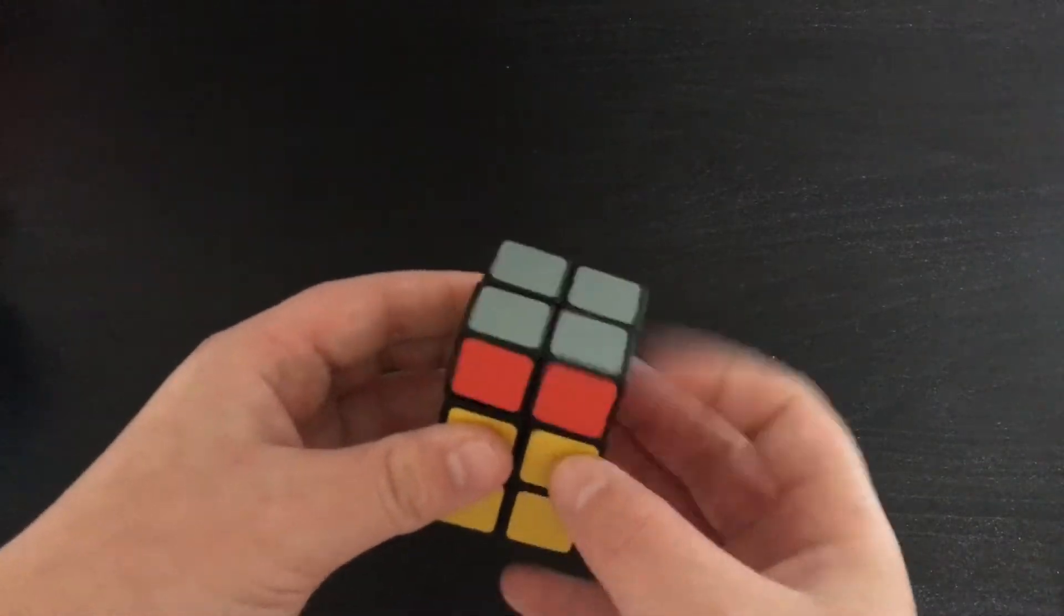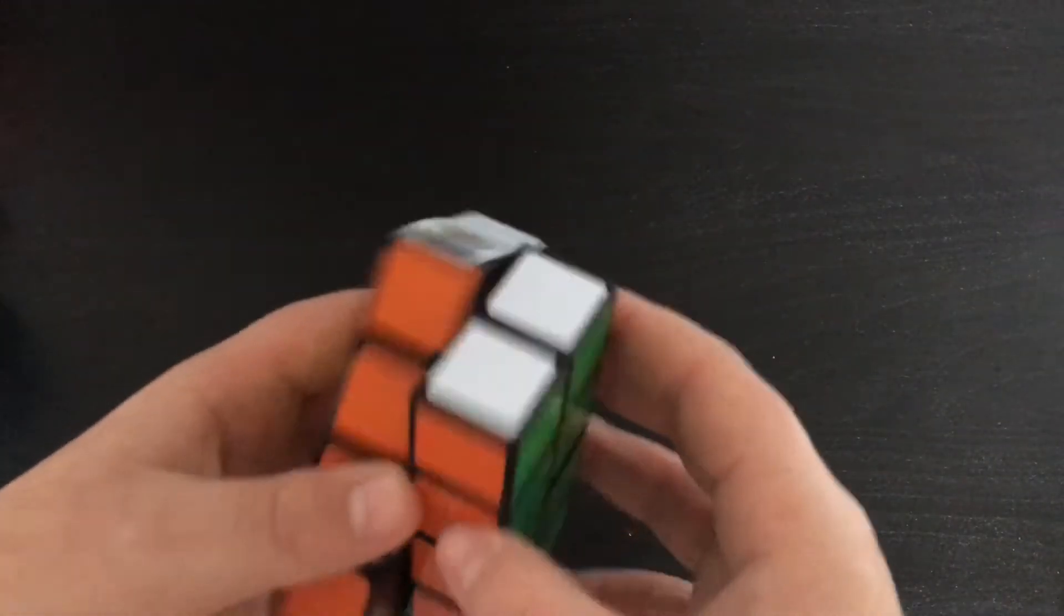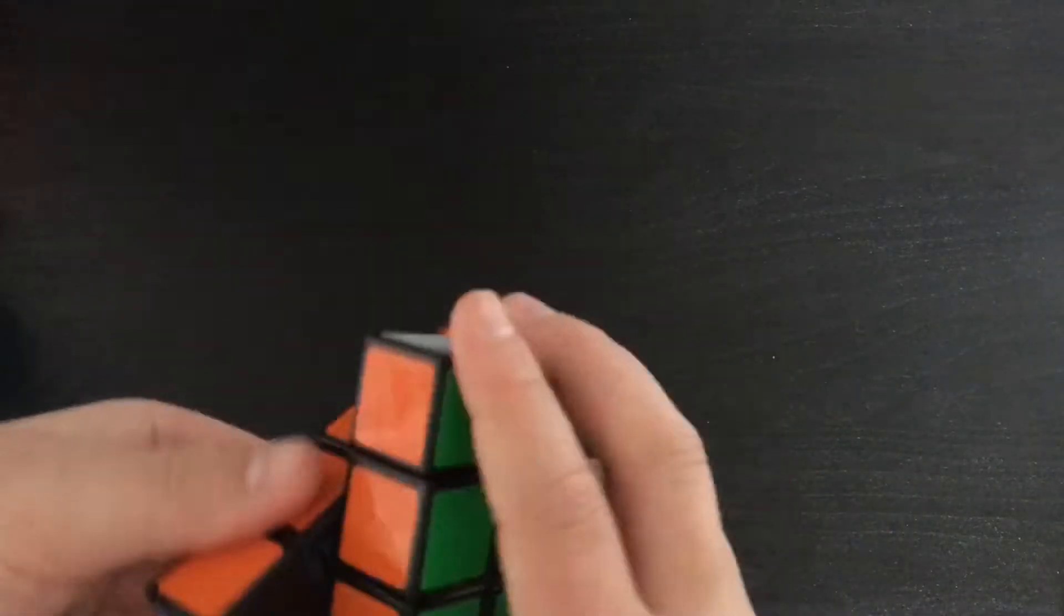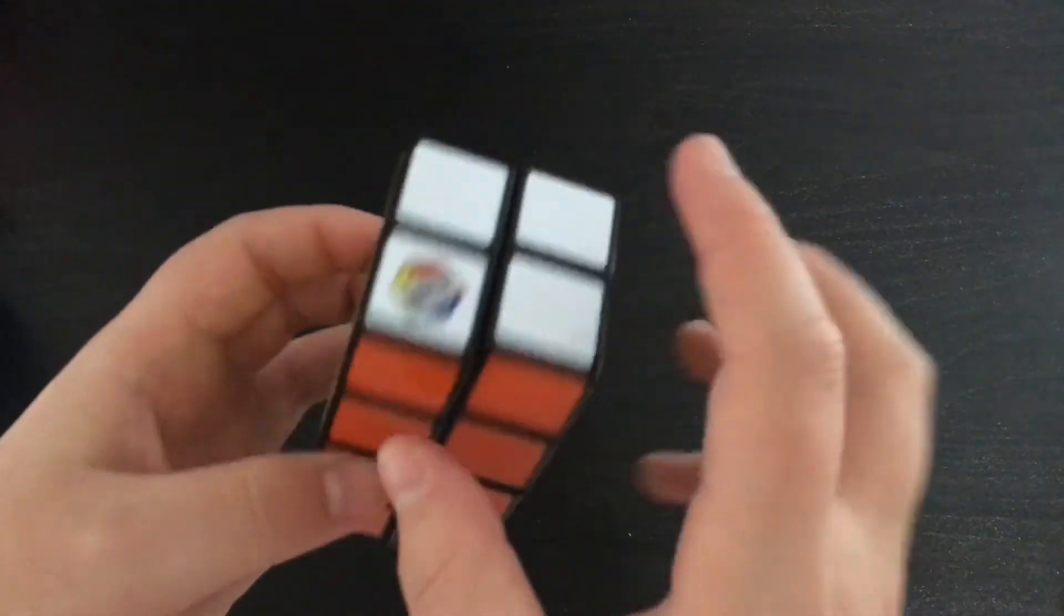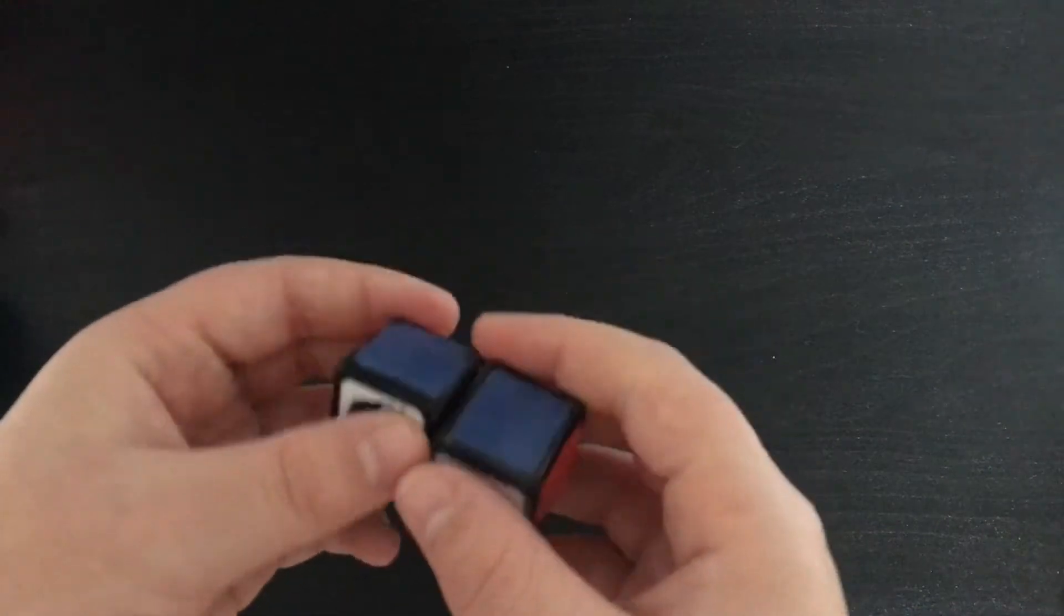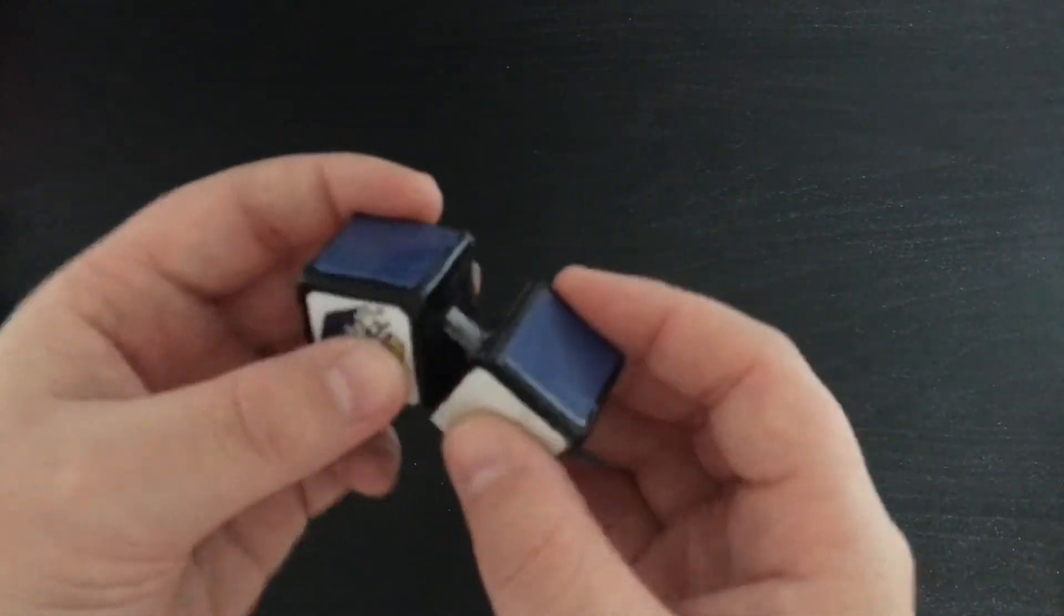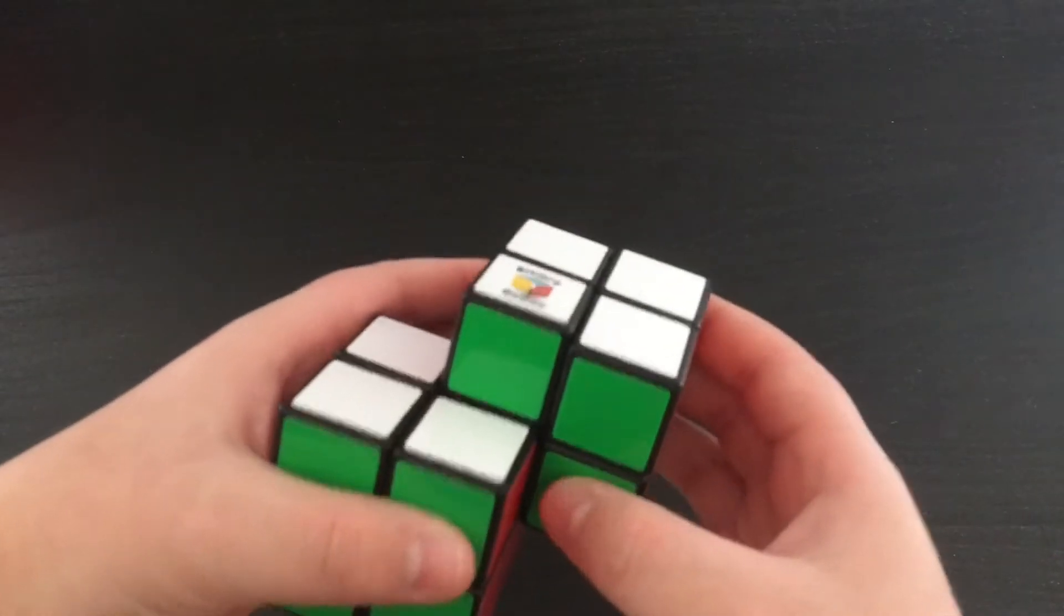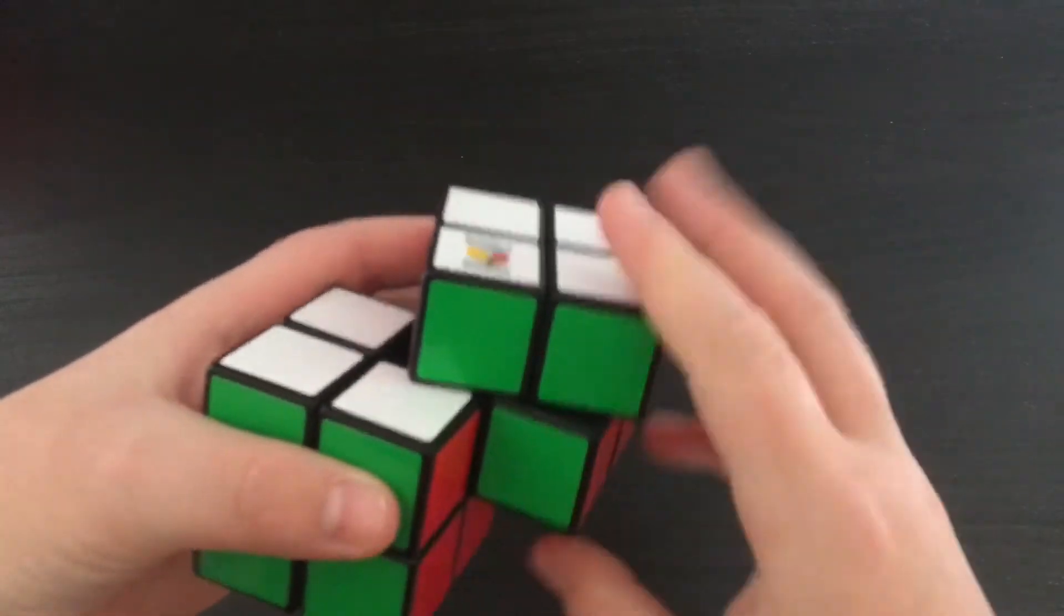So first up we have the 2x2x3 made by Zee brand. The Rubik's Tower or the 2x2x4 which shapeshifts and is a very fun solve. A 1x1x2 which I made out of Lego along with my 1x1.